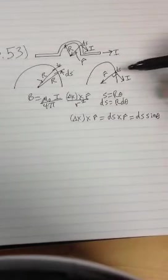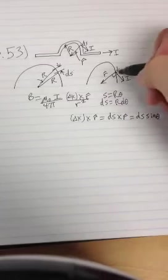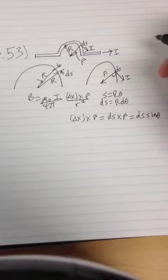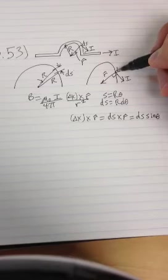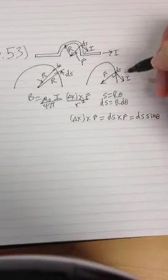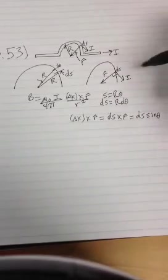Theta is the angle between the r hat and the current. In this case, because this is a semicircle, r hat will always be pointing perpendicular to the current.